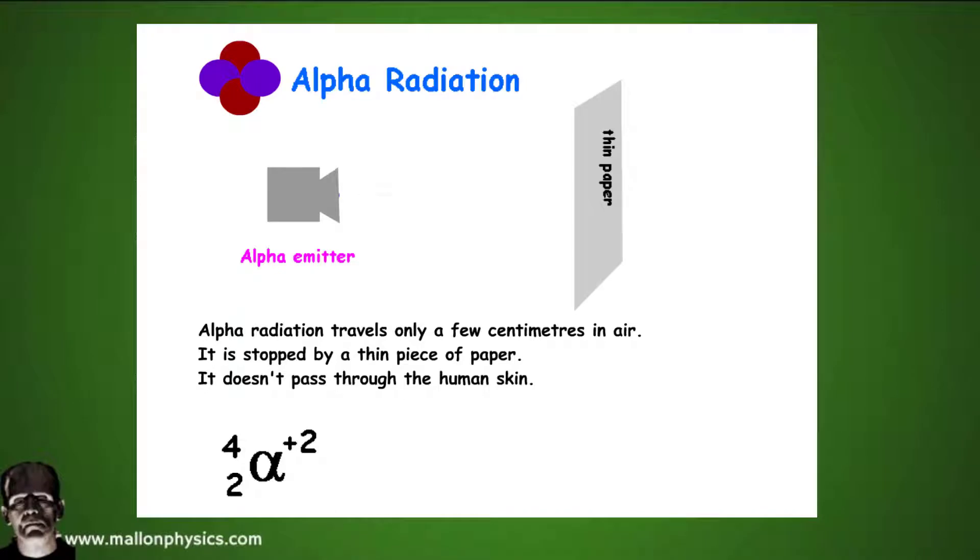Alpha radiation travels only a few centimeters in air and it's stopped by a thin piece of paper. It doesn't pass through the human skin. That doesn't mean you say that alpha radiation is harmless, because alpha radiation is very ionizing.